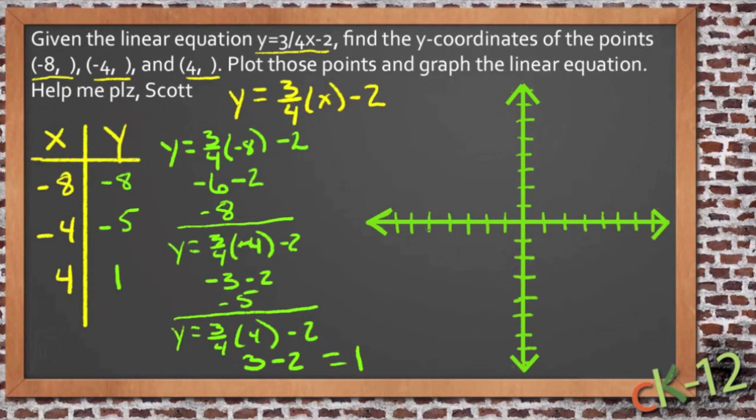So we have a point at negative 8, negative 8. So there's one clear down right here in the corner. And then we have a point at negative 4, negative 5. So it's 1, 2, 3, 4, down 5. Looks like it's right about there.